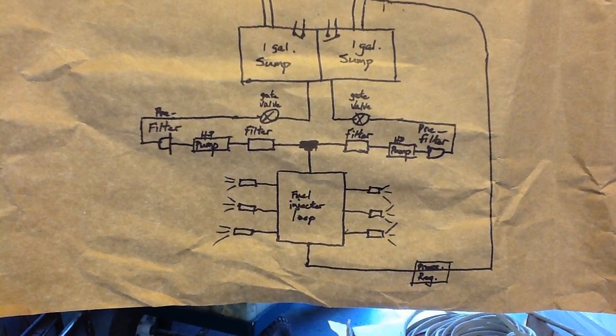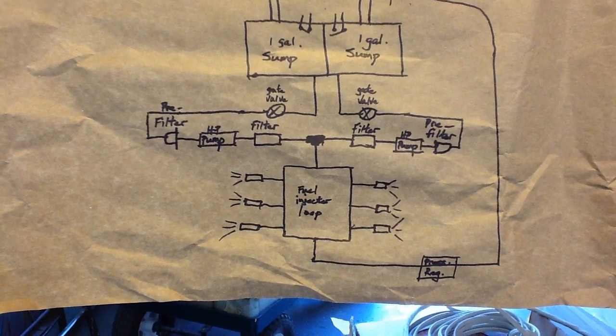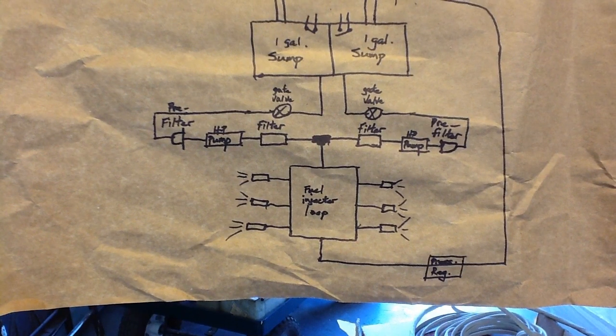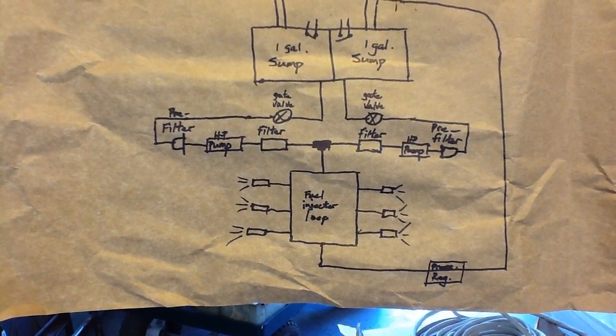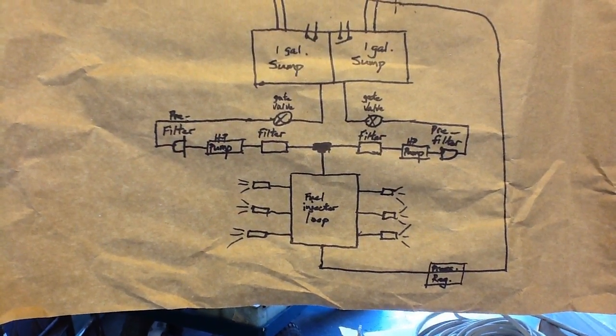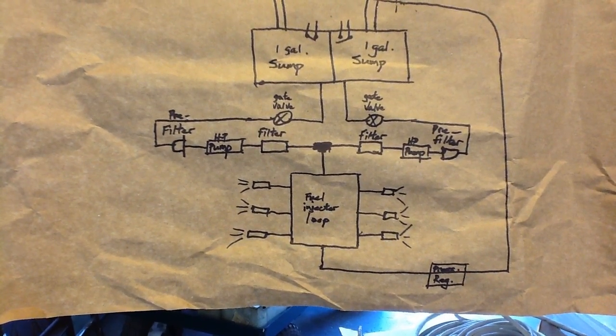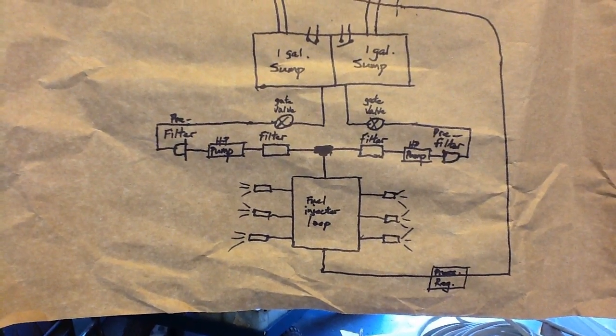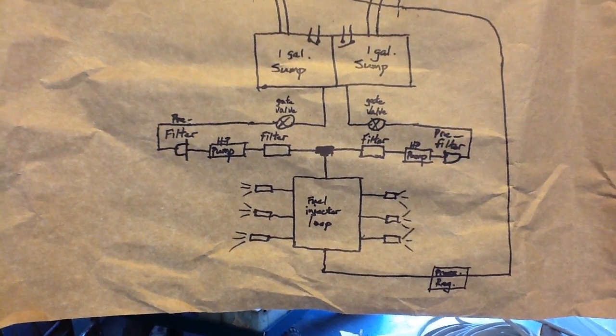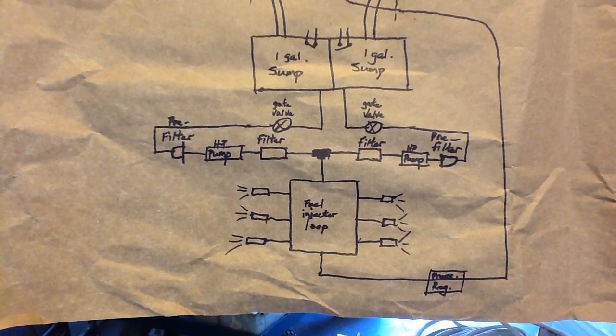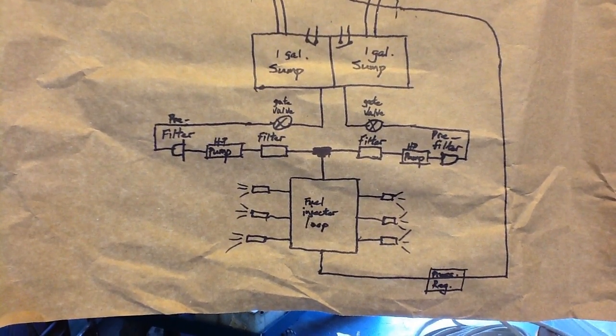There is one last thing that I failed to note about the high-pressure fuel pumps. One might look at the way they're set up and say, okay, I got one pump running and one not running—what's to keep one pump from forcing fuel back through the other pump and back into the other tank? Well, the answer is that these pumps have built-in check valves, so the fuel can only flow out and not backward through the pump.